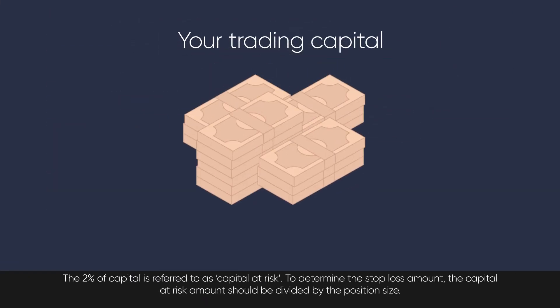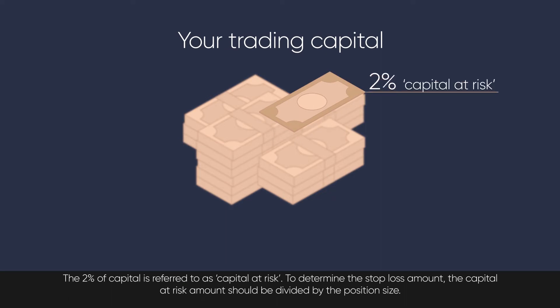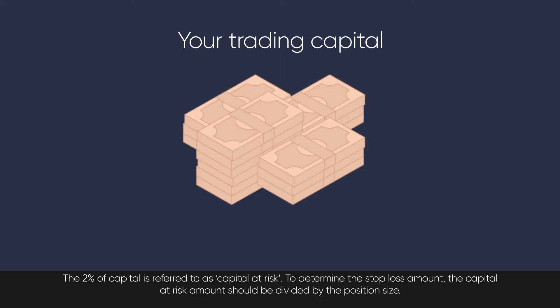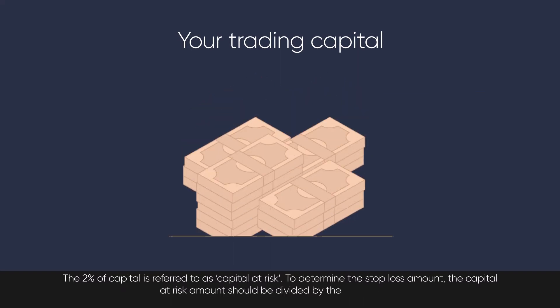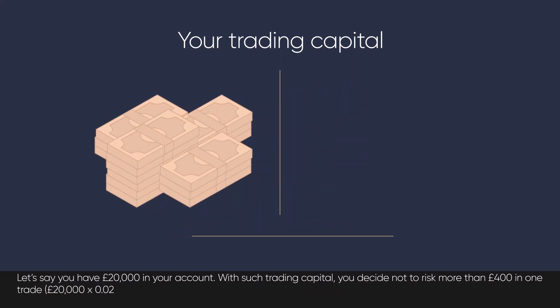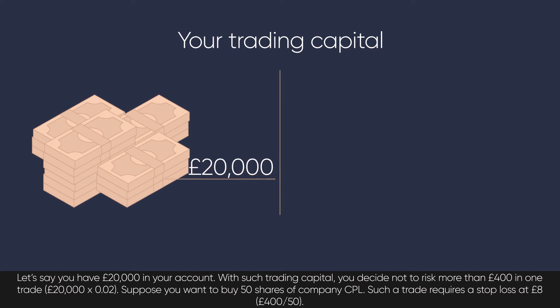The 2% of capital is referred to as capital at risk. To determine the stop loss amount, the capital at risk amount should be divided by the position size. Let's say you have £20,000 in your account. With such trading capital, you decide not to risk more than £400 in one trade — £20,000 x 0.02.